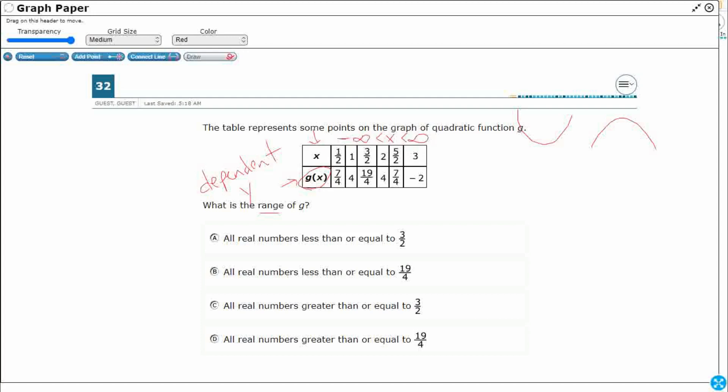It's the range that's going to hit this vertex and be all the numbers below if it's downward facing or this vertex and all the numbers above if it's an upward facing.